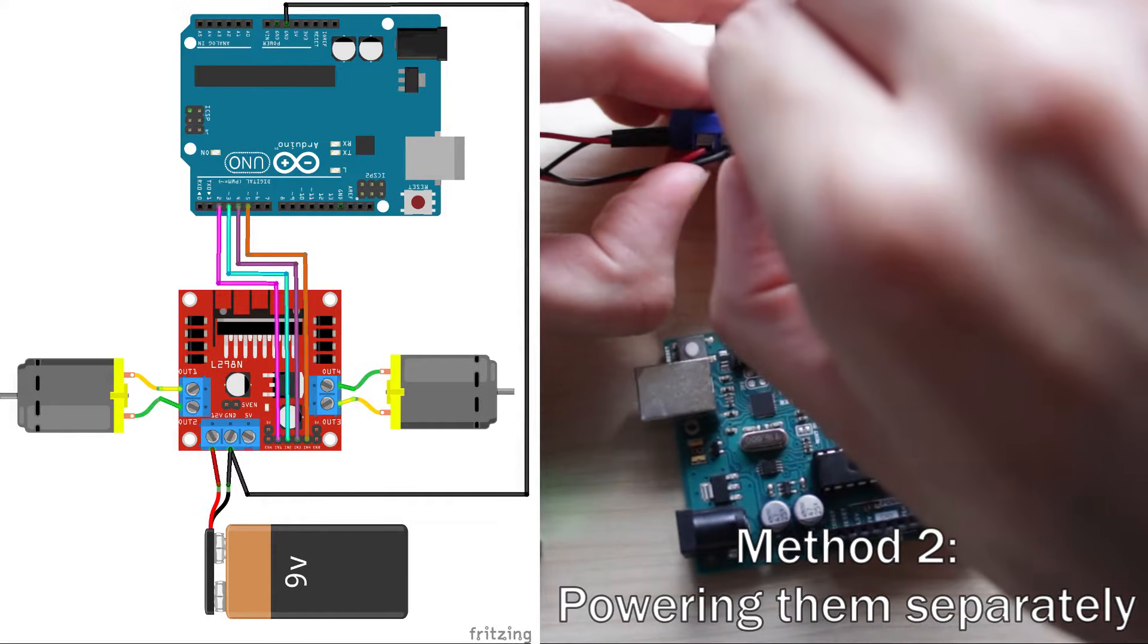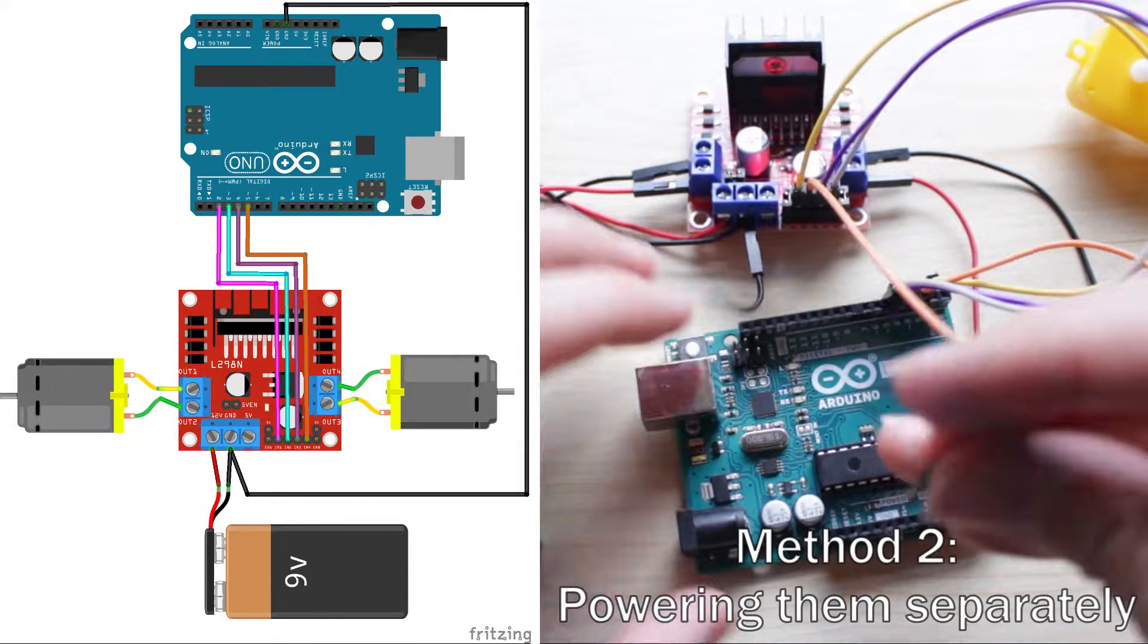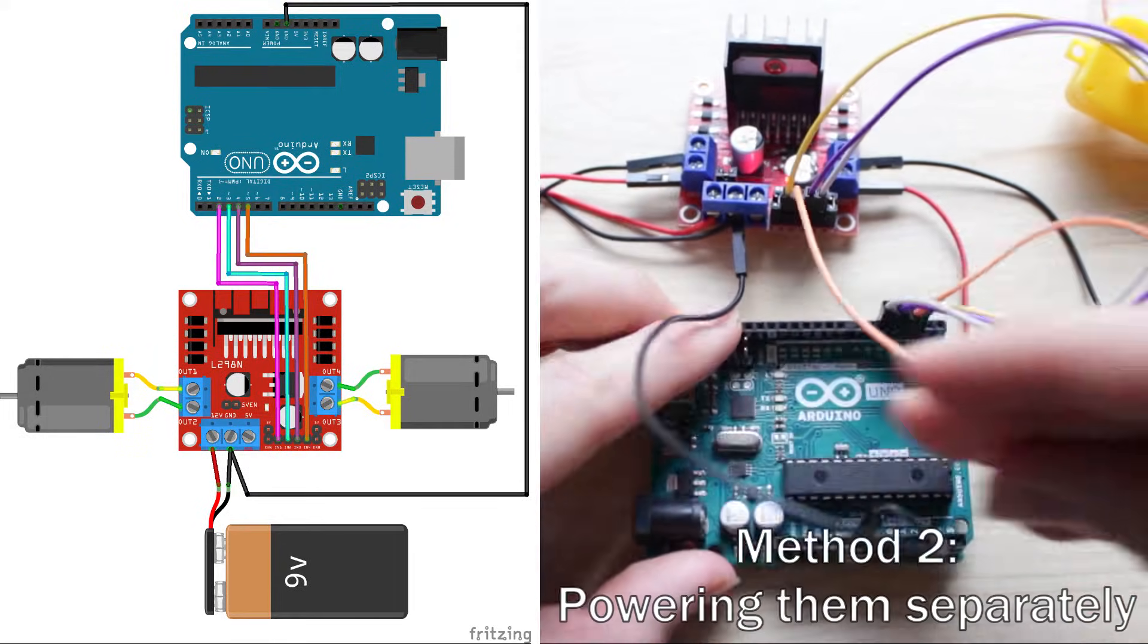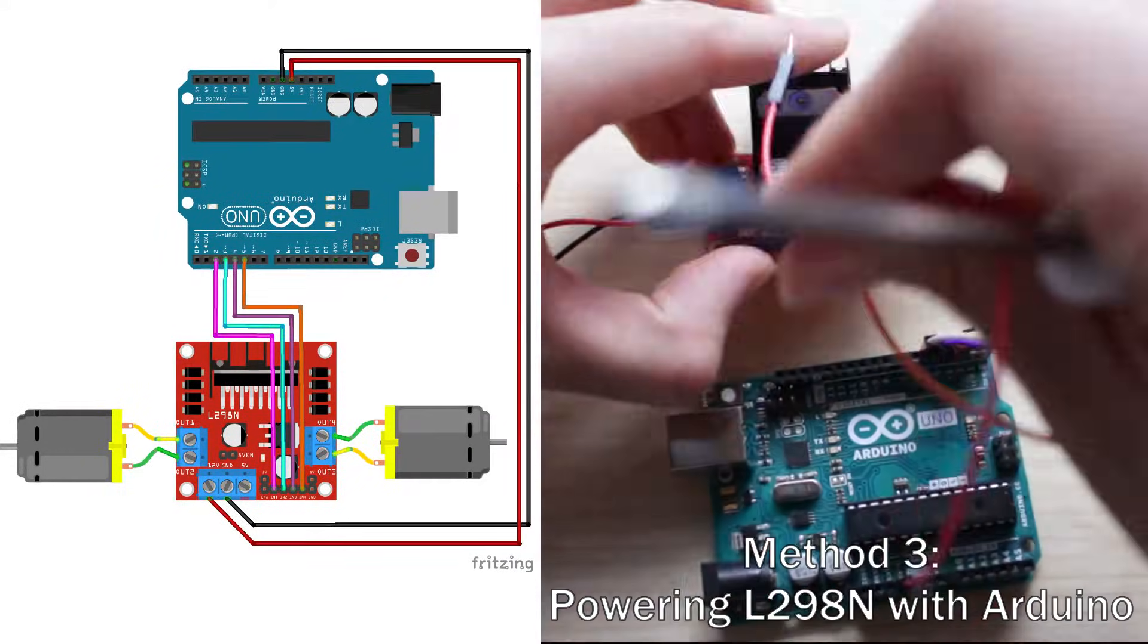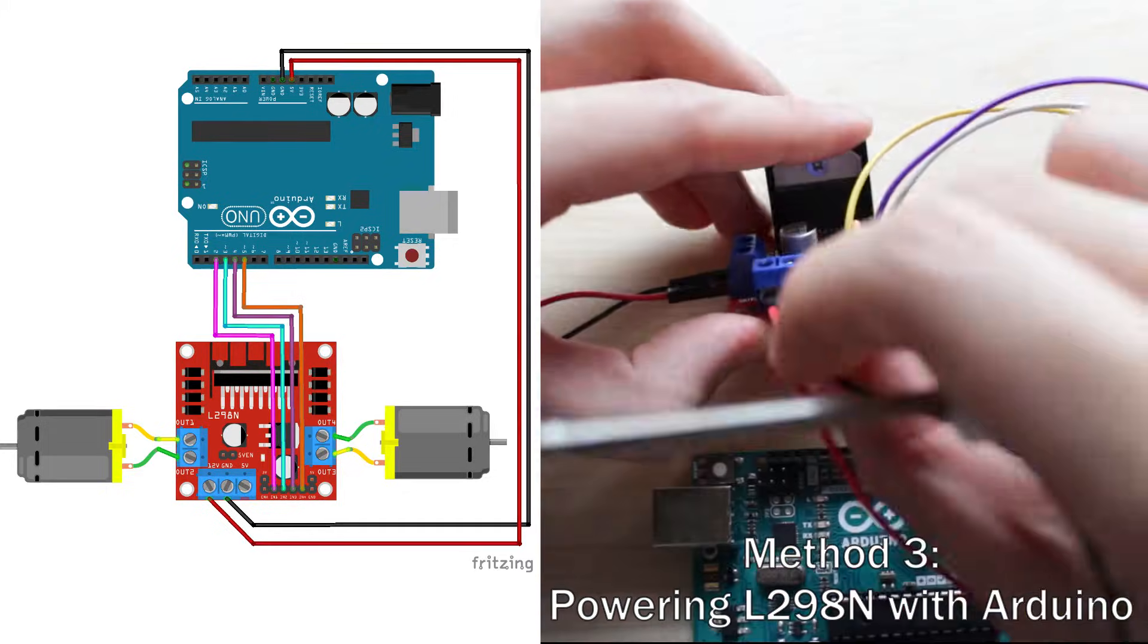If you don't power the Arduino with the 5 volt output, make sure the Arduino and power supply share ground like so. You can also power the controller with the Arduino's 5 volt output like this.